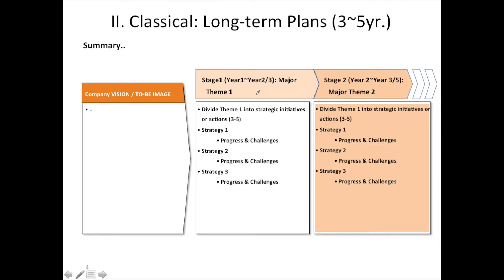In this slide, we will make a long-term plan for our business. First, you write the company vision or 'to-be' image. For example, if you have a bakery and you want to be the best bakery in town, you write it here. Then you divide your strategy into 2 to 3 stages and write major themes. For example, if you want to be the largest bakery chain in the country, you might grow organically or through acquisition — you can write 'acquisition' here. Stage 2 could be integrating all those bakeries or creating a franchisee program.